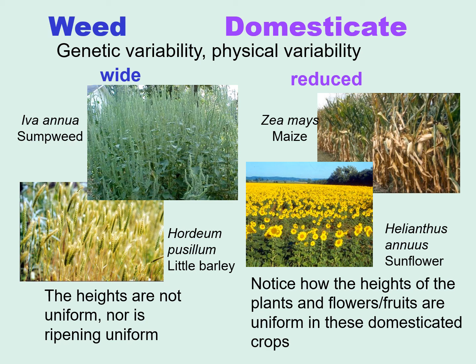Weeds also tend to have high genetic variability, which translates into high physical variability, whereas domesticates usually have reduced genetic variability and therefore reduced physical variability. For example, on the left you can see two current weedy plants at different heights, with different ripening — some still green, the tips already ripe. Whereas in the two domesticated plants shown in the pictures, not only are they all ripe at the same time, but look at the maize — all the ears are at the same height, bred to be harvested by machines.